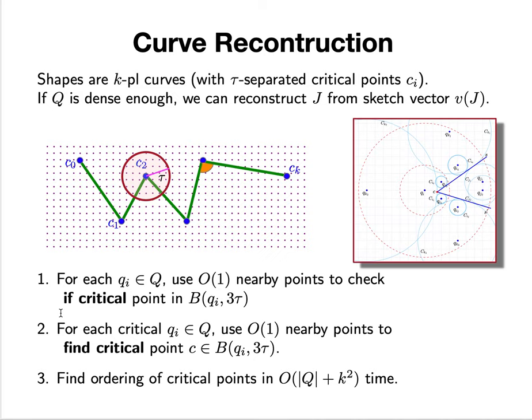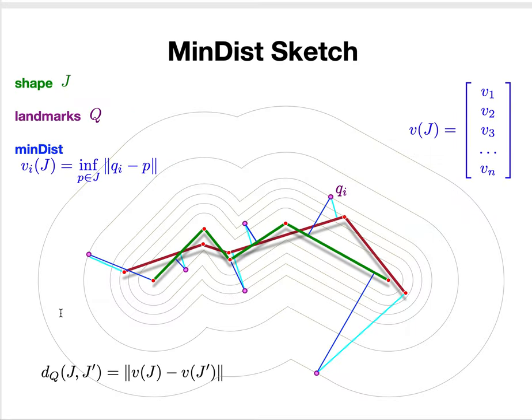For all the ones near a critical point, we can recover that critical point exactly through technical case analysis. You can see how it carves out empty circles to recover the exact critical point. Once we have all critical points, we figure out the ordering and recover the curve by stringing them together in linear time in the landmark points plus K² time for critical points.